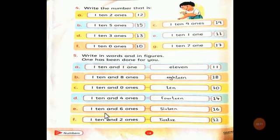One ten and six ones, we will write sixteen. Part F, one ten and two ones, we will write twelve. We will write numbers here. We have already completed tens and ones, words and numbers.